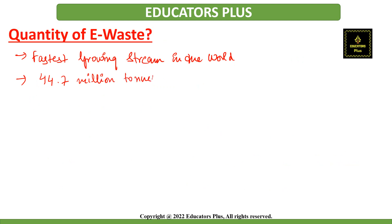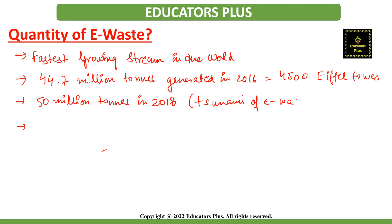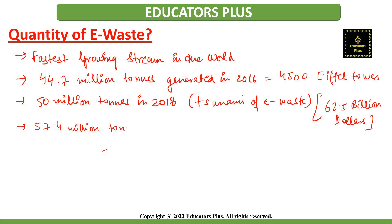E-waste is considered the fastest growing waste stream in the world. In 2016, 44.7 million tons of e-waste was generated, equivalent to 4,500 Eiffel Towers. In 2018, it was estimated at 50 million tons — the United Nations gave it the name 'tsunami' for e-waste — with a value of at least 62.5 billion dollars annually. In 2021, an estimated 57.4 million tons of e-waste was generated globally.